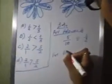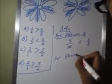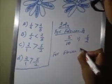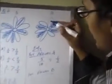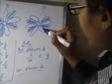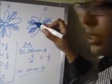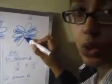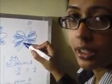Now count the same fraction for flower B. 1, 2, 3, 4, 5, 6, 7, 8, 9, 10 — here also the total number of petals are 10.